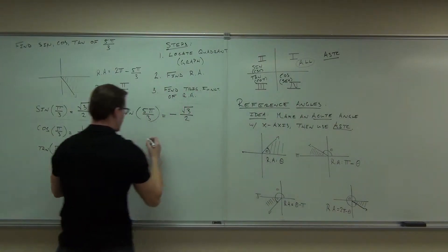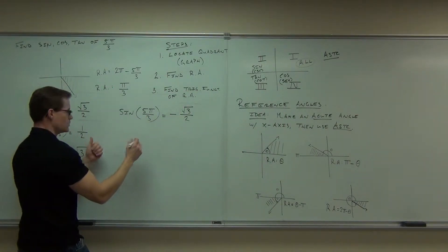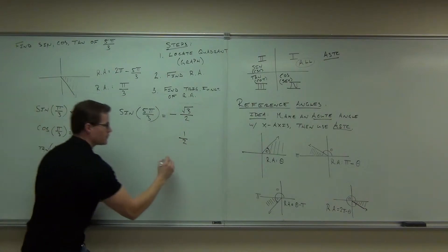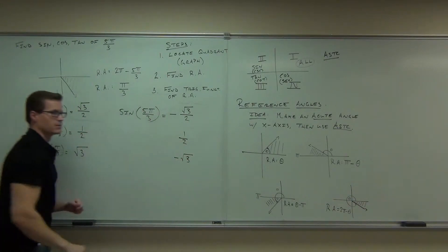And that's all I'm doing right here. So I can guarantee you my answers are going to be negative root 3 over 2, positive 1 half, and negative root 3. That's it.